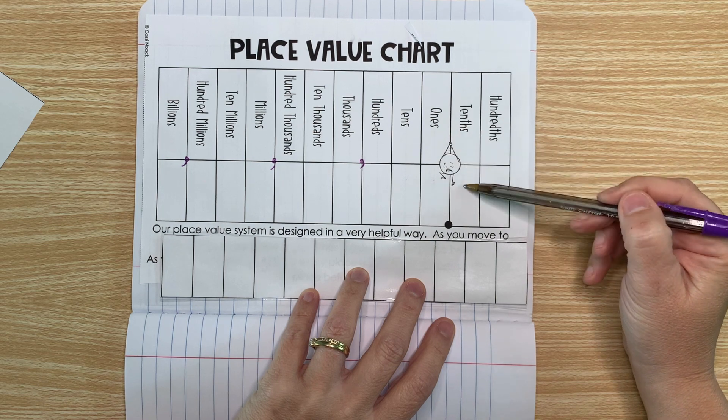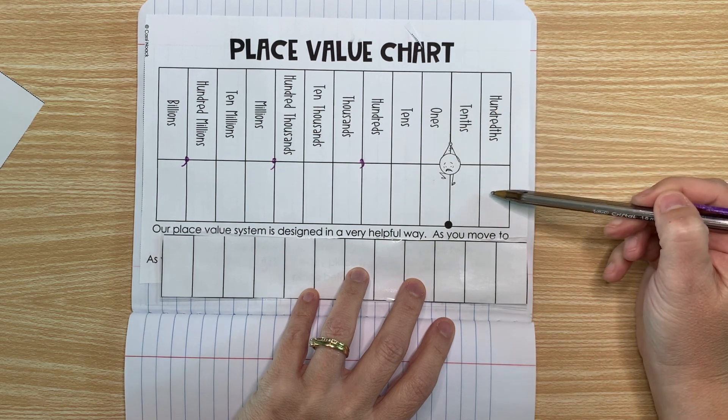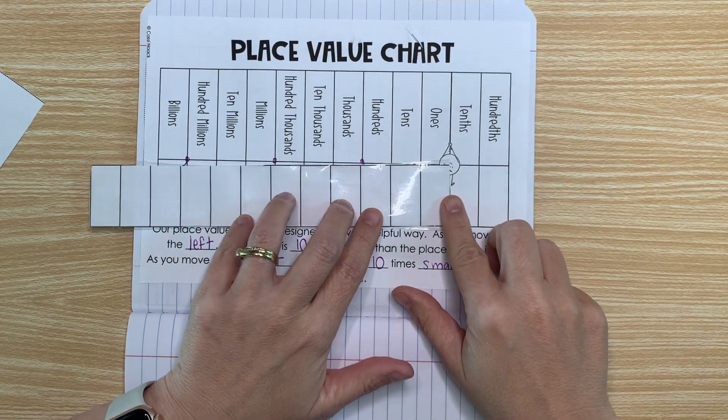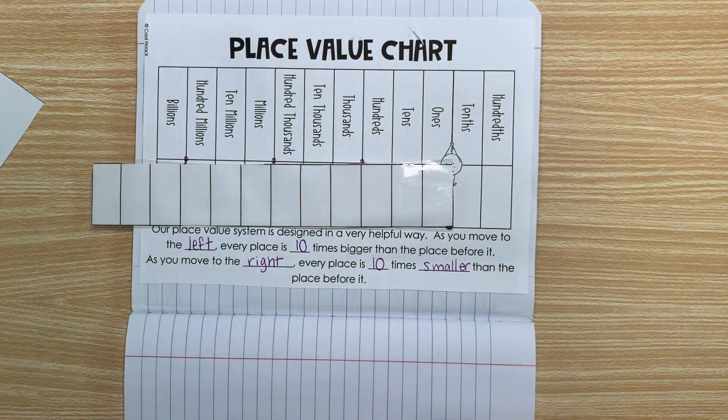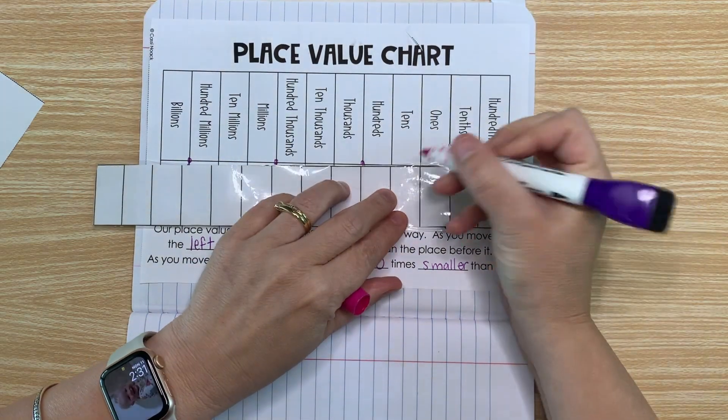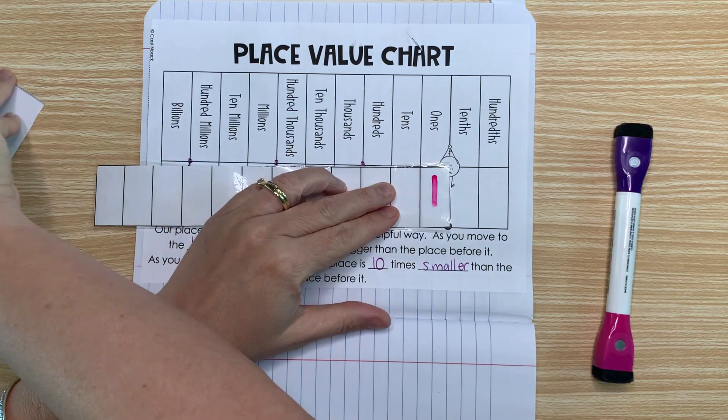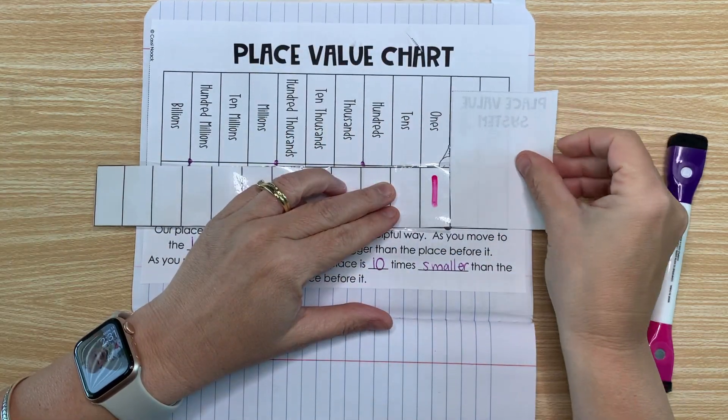So this is the tenths place. This is the hundredths place, but we'll just ignore it for now. We'll just focus on the ones place. So I'm going to take a dry erase marker and I'm going to write the number one on my number strip. So again, we're just going to ignore this part for now.